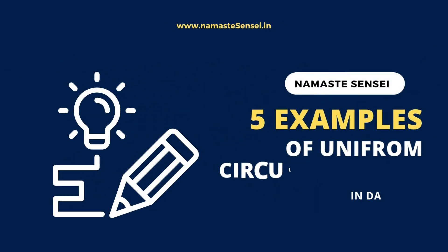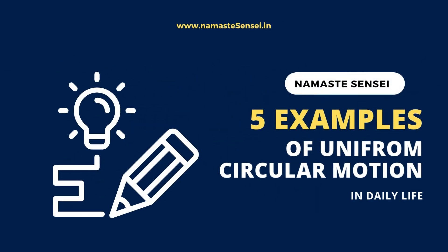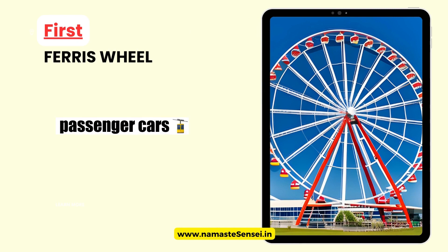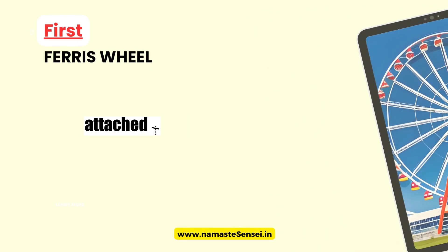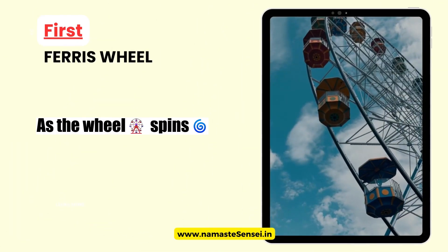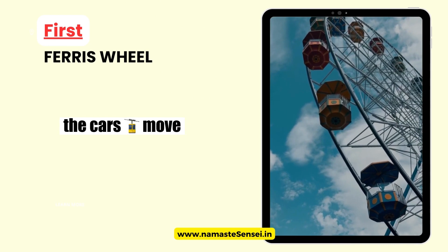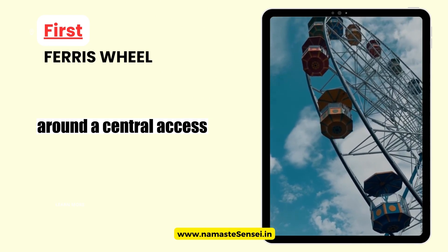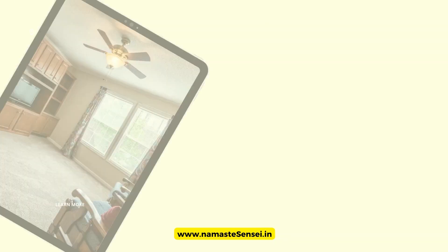Five Examples of Uniform Circular Motion in Daily Life. First, Ferris Wheel. A Ferris wheel consists of multiple passenger cars attached to a rotating structure. As the wheel spins, the cars move in a circular path around a central axis.